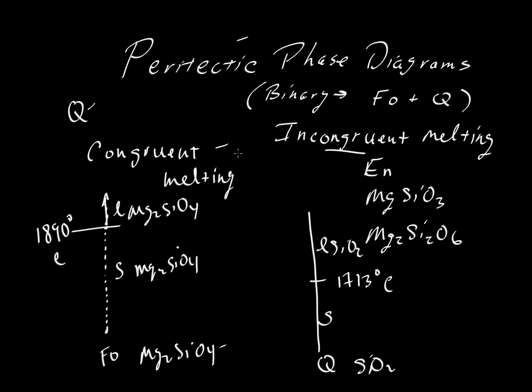So now that we understand congruent melting, let's take a look at incongruent melting and see what happens. What if we have a system that looks something like this, where we have forsterite over here and quartz over here, and we connect the two, we make mixtures of the two. We know that this forsterite will melt at 1890 and this fellow will melt at 1713.